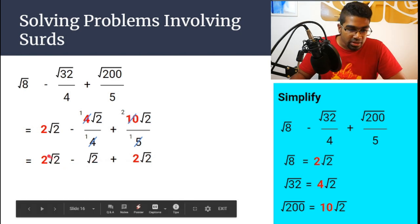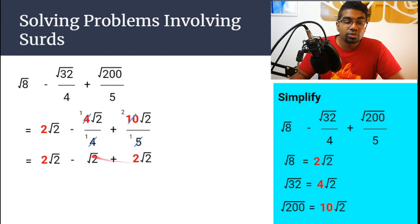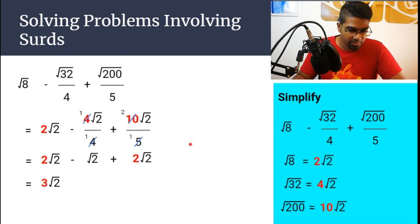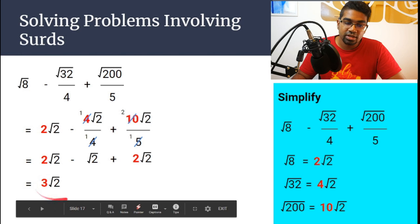Then when you look at it like that, it is just 2 minus 1 plus 2. So 2 minus 1 is 1. 1 plus 2 is 3. So how many surd 2's do we have here? 3. The answer we get is 3 surd 2.